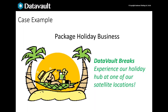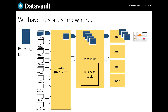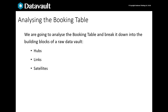If you remember from our previous video, we're interested in a travel business. We want to build a data pipeline for a single source table — bookings — from the booking system. We're going to break the table down into hubs, links and satellites.